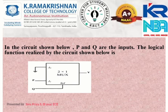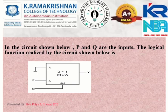It is a simple 2x1 multiplexer. Before that, we must know about what a multiplexer is. In digital electronics, a multiplexer is also known as a data selector. It is a device that selects from several analog or digital input signals and forwards the selected input to a single output line. The selection is directed by a separate set of digital inputs known as select lines.